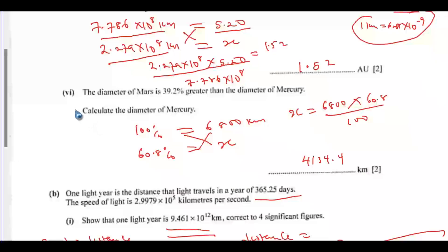The next one is this. The diameter of Mars is 39.2% greater than the diameter of mercury. Calculate the diameter of mercury. This was wrongly interpreted. Actually, this 6,800 is the percentage of mercury at 139.2. I'm going to erase this and solve it again.